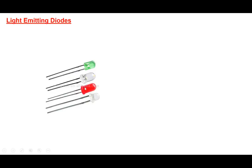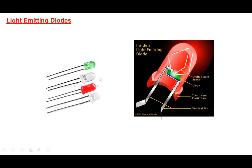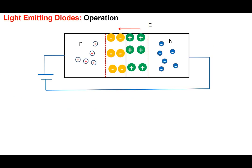Another kind of diode we are all familiar with is the light emitting diode (LED) — red, green, and white LEDs. If we remove the casing, we see a piece of semiconductor which is basically a diode with an anode and cathode. The current flowing through it gets converted into light. It's a P-N junction diode.